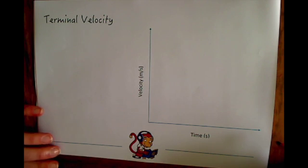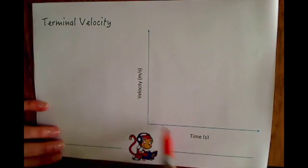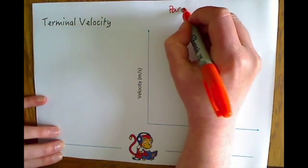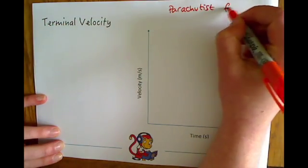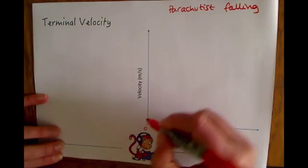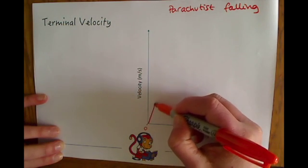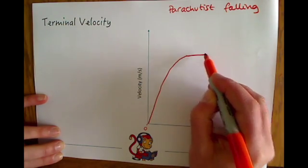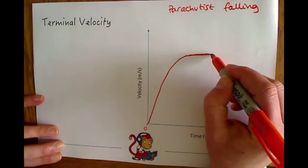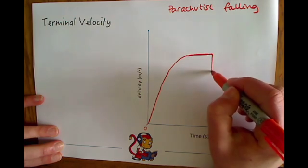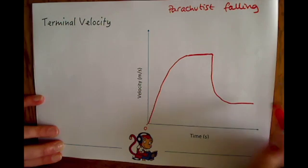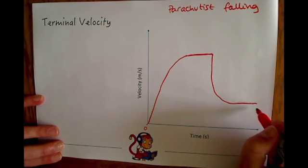If we now link terminal velocity with our ideas of velocity-time graphs, we can draw a velocity-time graph for a parachutist falling. Starting at time zero, when the parachutist falls out of the plane, first of all he will accelerate and then reach a terminal velocity, which will be depicted by a flat portion on the graph. Then he will open his parachute after a while and he will decelerate, reaching a new terminal velocity shown by a second flat part, until he finally lands.